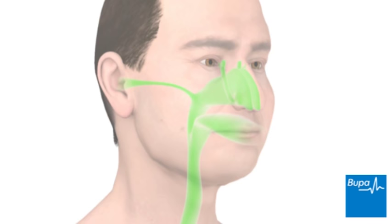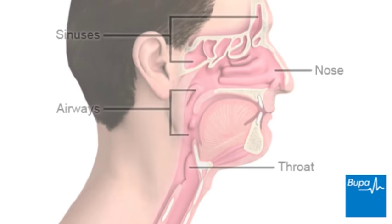Cold viruses grow in soft, warm surfaces, such as your nose, throat, sinuses or airways.